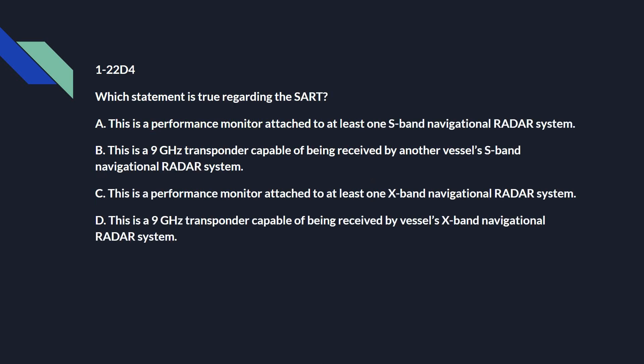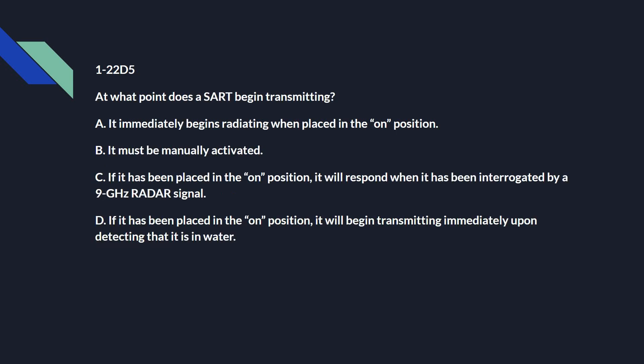1-22 Delta 4: Which statement is true regarding the SART? And that's D: this is a 9 GHz transponder capable of being received by a vessel's X-band navigational radar system. 1-22 Delta 5: At what point does a SART begin transmitting? C: if it has been placed in the on position, it will respond when it has been interrogated by a 9 GHz radar signal.